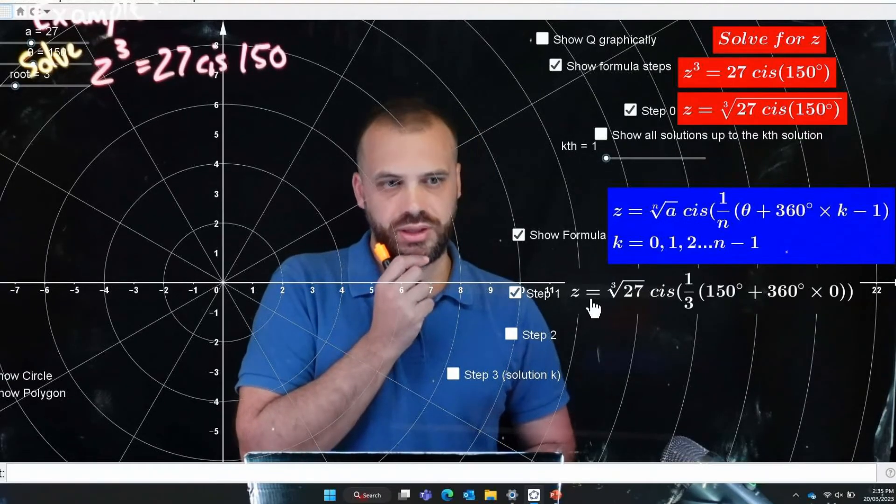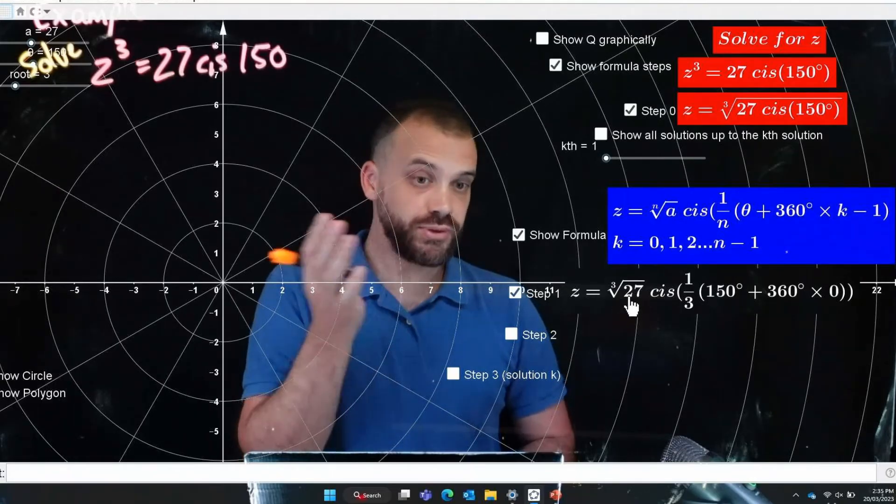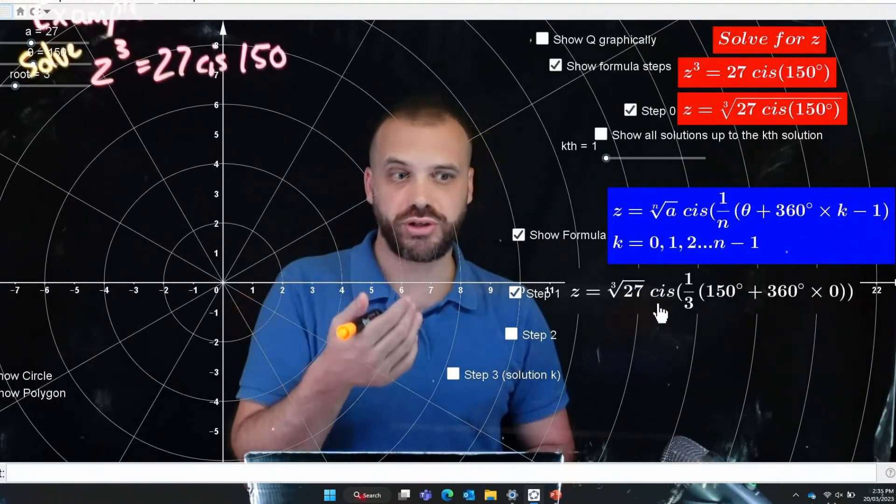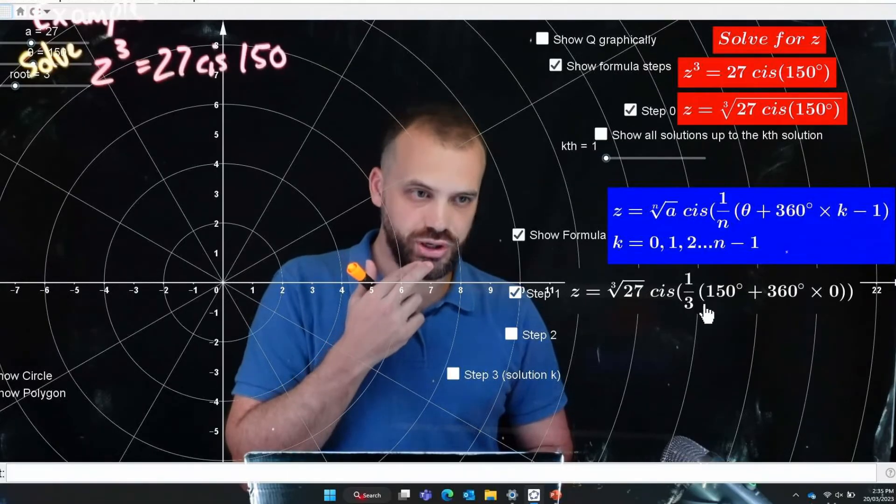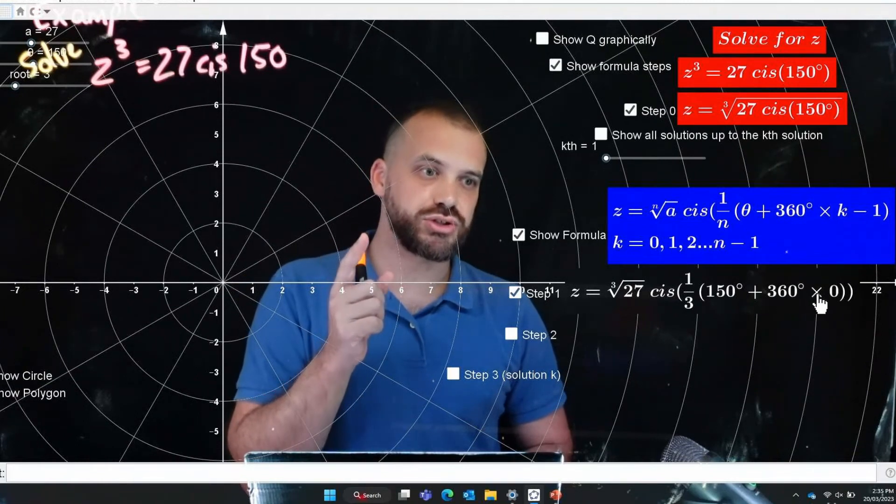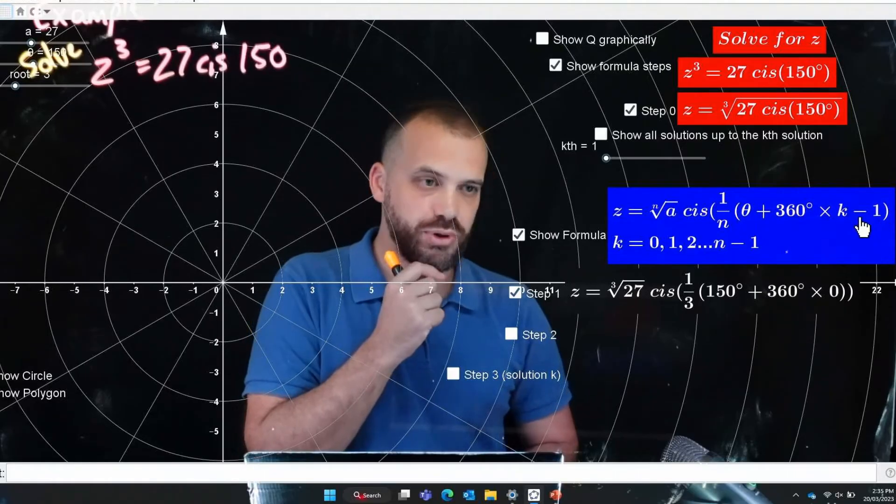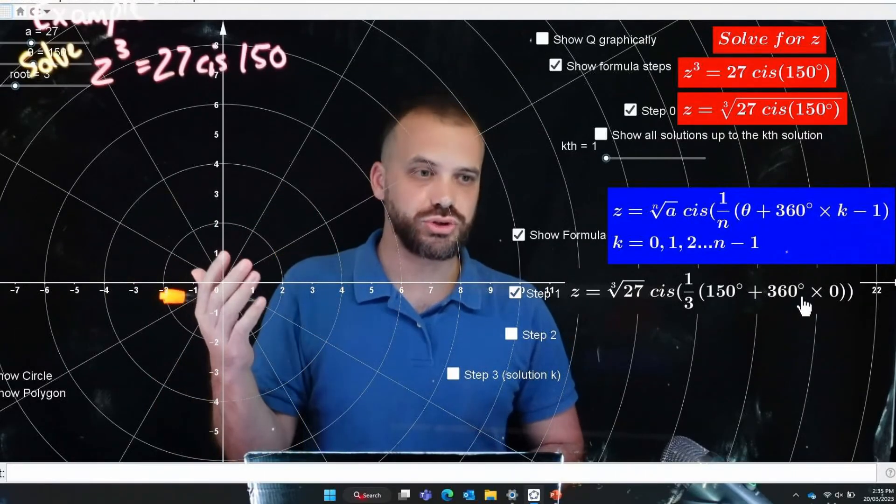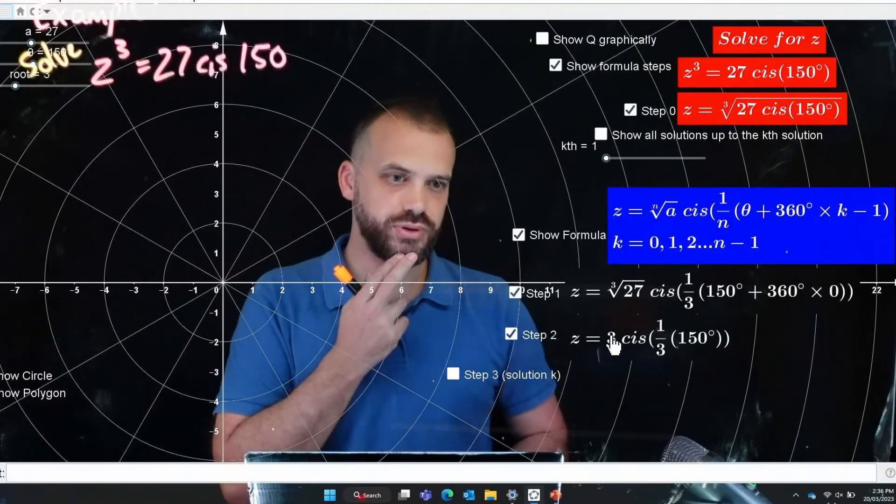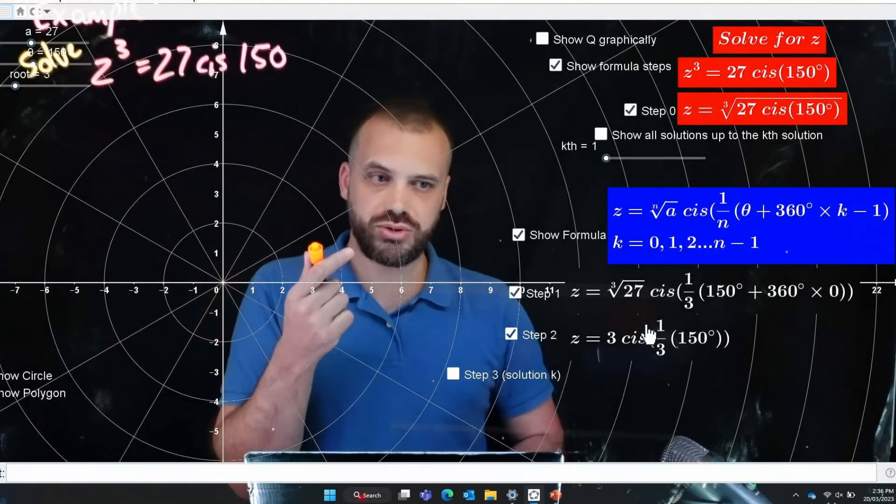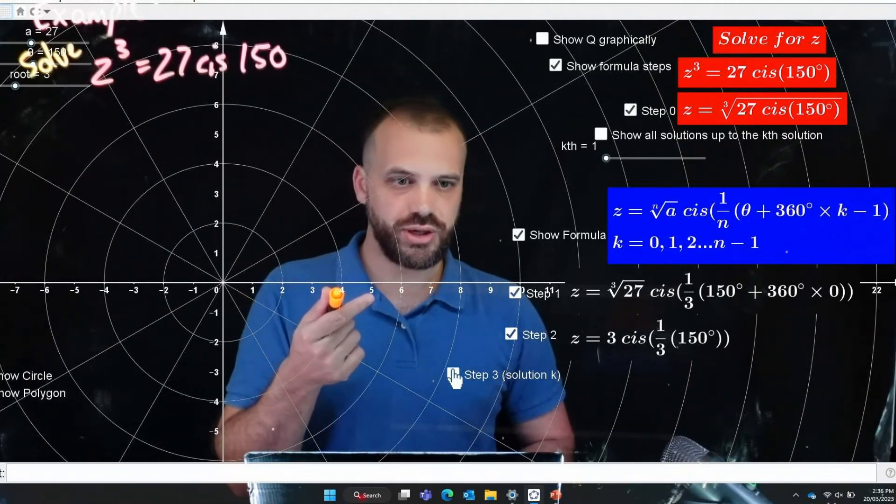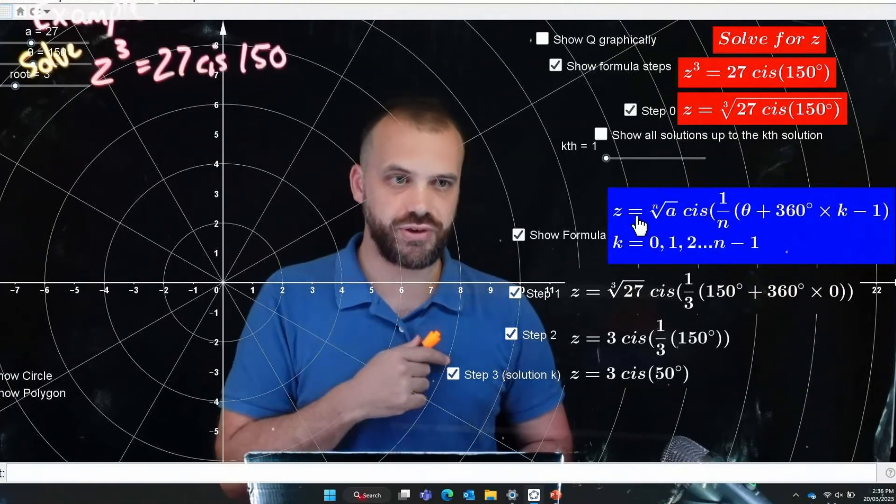All right step one, z is equal to the cube root of 27 we've been doing that, and then cis 1 over 3 because we're finding the cube root, if we're finding the fourth root it'd be 1 over 4, times 150 degrees that comes from our question plus 360 degrees times zero. That's our k minus 1, we're finding the k minus 1th solution so if we want to find the first solution we do 1 minus 1 which is 0. Okay that's going to be equal to 3, the cube root of 27 is 3 cis 1 third 150 because we're doing 360 times zero so we just do 150. So our first solution is 3 cis 50 degrees.